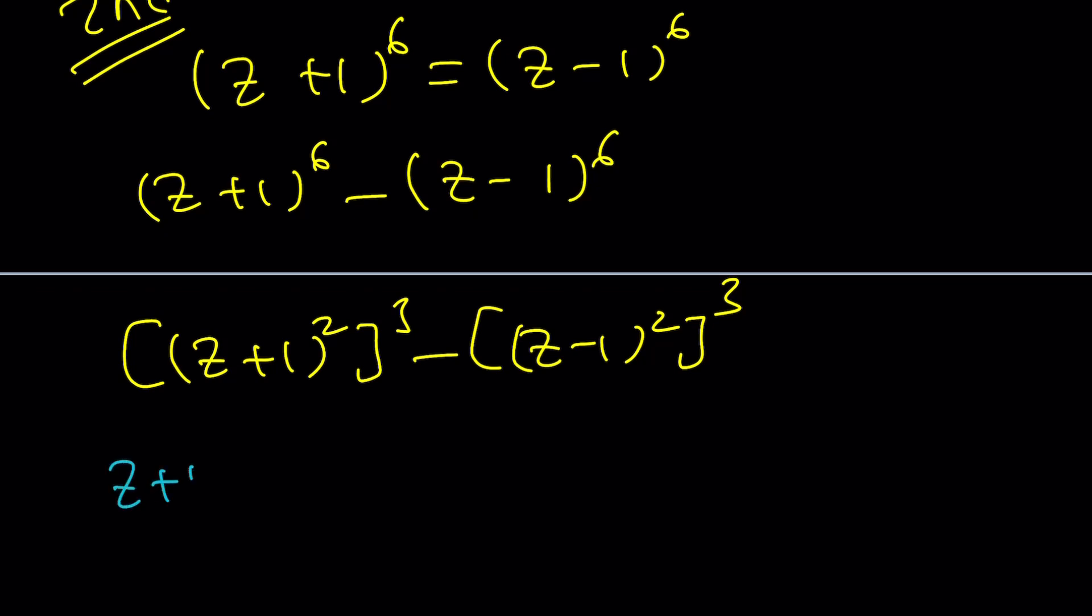This is A. This is B. So we have A cubed minus B cubed. So A cubed minus B cubed is factored as A minus B times A squared plus AB plus B squared. This is my A. This is my B. Remember that. So first A minus B.